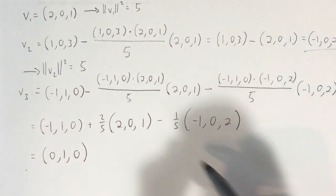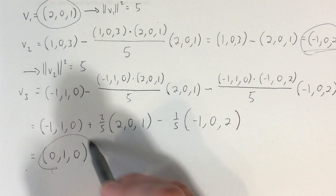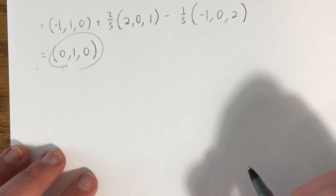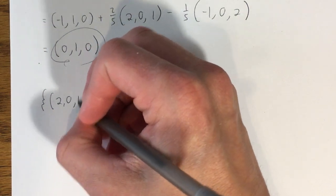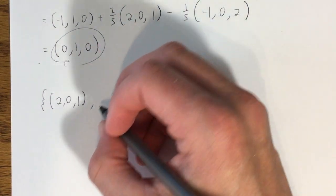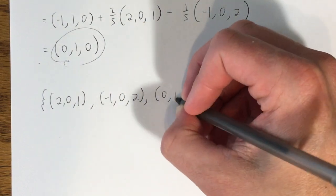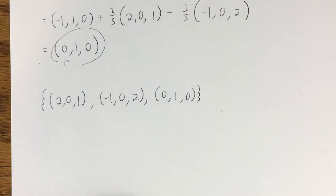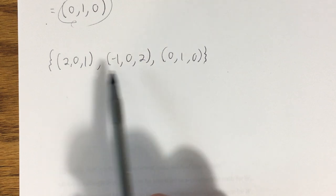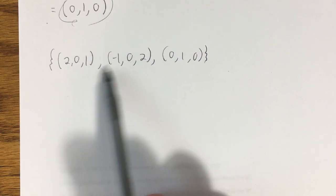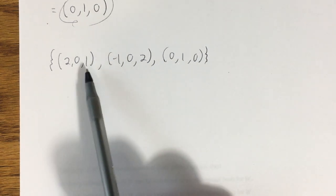So I have my three vectors, and this is going to make the orthogonal basis: (2, 0, 1), (-1, 0, 2), and (0, 1, 0). It's worth, at this step, verifying that this is in fact an orthogonal basis by taking dot products of pairs of vectors and showing that all the dot products end up being equal to 0, which they do.